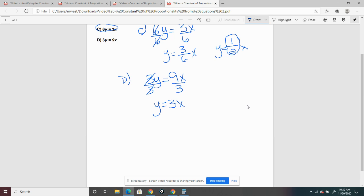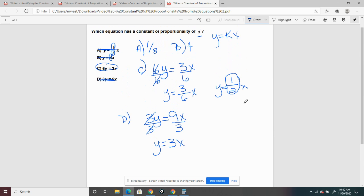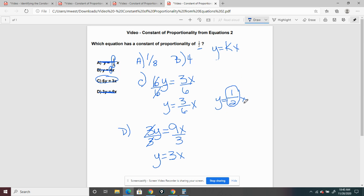And you've got y equals, and 9 divided by 3 is 3, and then x. So the constant of this one is 3. So that goes that way. We can erase that. So our answer there is C.